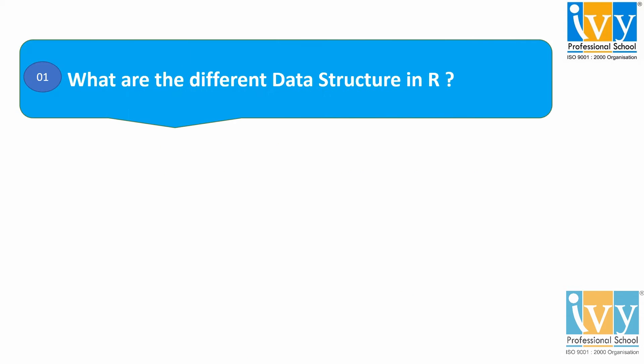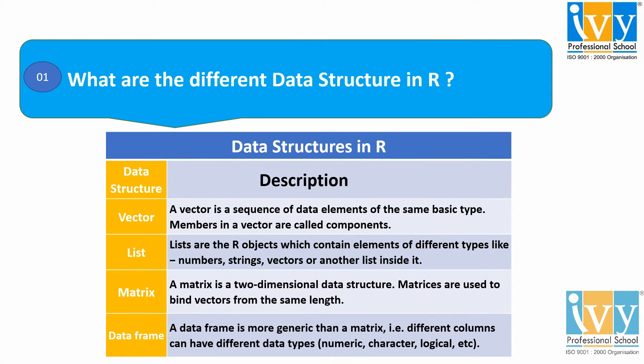Our first question is: what are the different data structures in R? A data structure is a collection of data values; we can say it is a named location that can be used to store and organize data. There are 4 different data structures in R: namely Vector, List, Matrix, and DataFrame. Let's get more details about them.